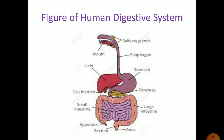After chewing the food, it is swallowed and goes into the food pipe, known as the esophagus. From the esophagus, the food reaches the stomach. From the stomach, the partially digested food goes into the small intestine, which is the place where complete digestion of the food takes place with the help of various digestive juices.